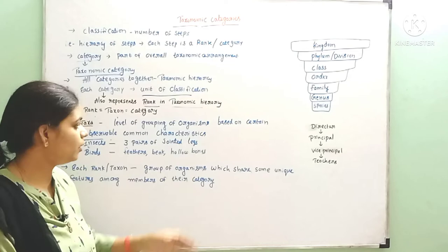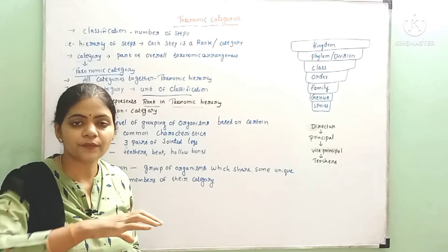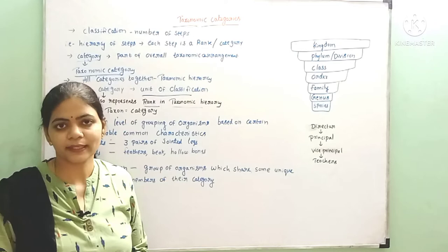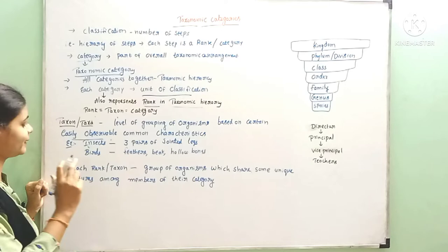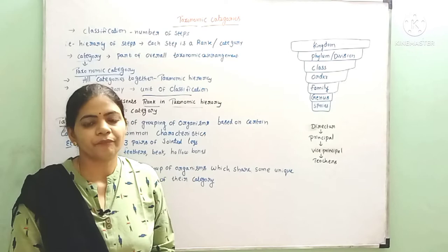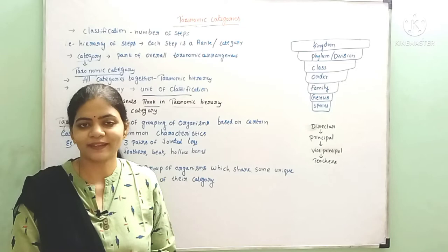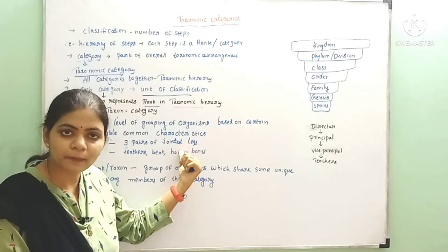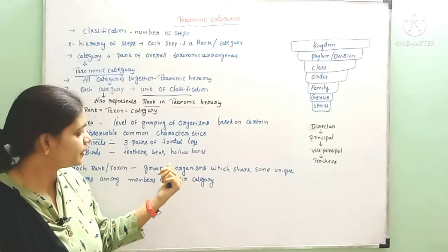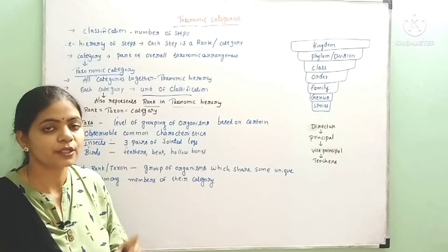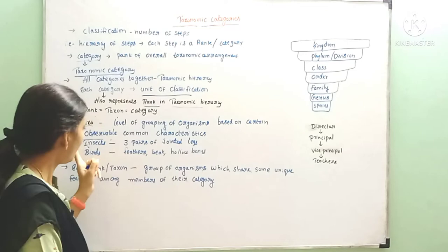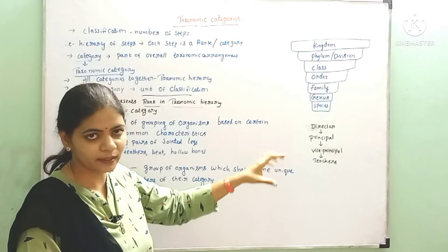What is meant by taxon or taxa? Taxa is the plural. Taxa means a level of grouping of organisms based on easily observable characters. Based on those easily observable characters, organisms are grouped — that is called taxon or taxa. For example, if we take insects, there are different types with different colors, shapes, and sizes, but all insects share one common character: they have three pairs of jointed legs — whether a mosquito, housefly, or butterfly. By taking this easily observable common character, all the insects are kept in one category.